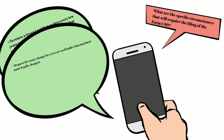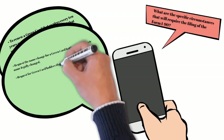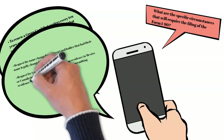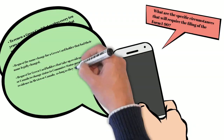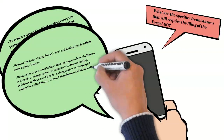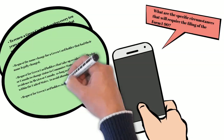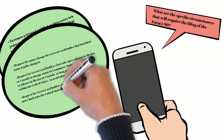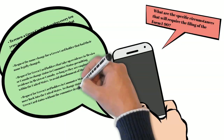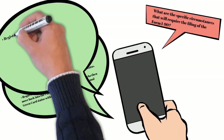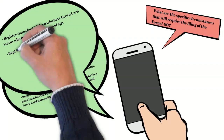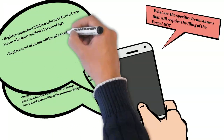To request, for green card holders that take up residence in Mexico or Canada, a change of status to commuter status, permitting residents in Mexico or Canada as long as they are employed within the United States, to avoid abandonment of their status. To request, for green card holders in commuter status who then move back into the United States, a change of status to normal green card status without the commuter designation. To register status for children who have green card status and have reached 14 years of age. And replacement of an old edition of a green card.